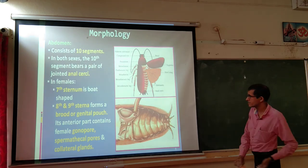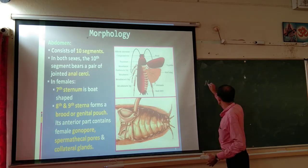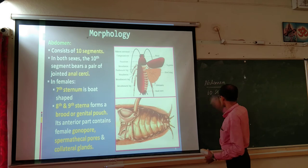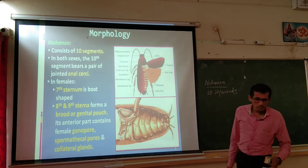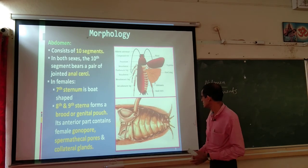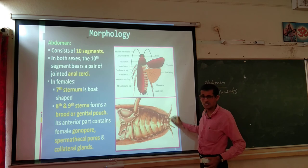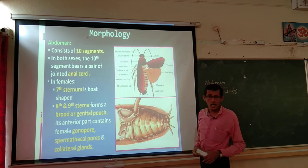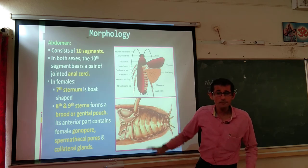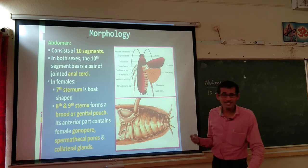The abdomen consists of 10 segments. The 10th segment bears a pair of jointed anal cerci in both sexes. The anal cerci are always in contact with the ground substratum and detect vibrations and sound — serving a sensory function.